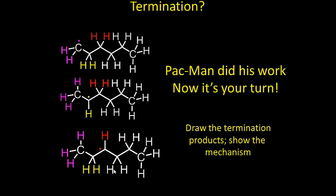Now it's your turn to do your part. I want you to take the propagation radicals and draw the termination products and show the mechanism. This is a pop quiz—you know how many points it's worth. For the sake of continuity, let's say these radicals are going to terminate using chlorine.